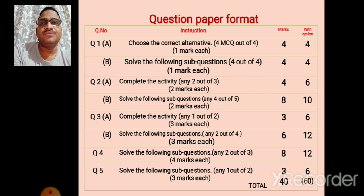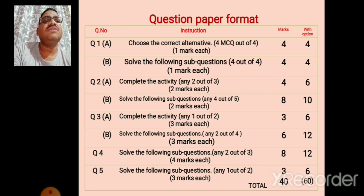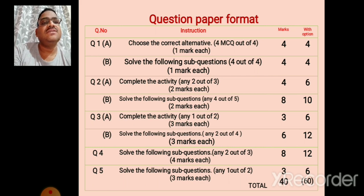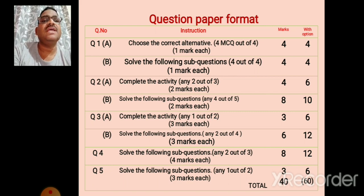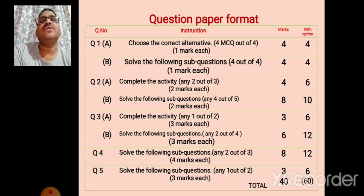Question number 2 again has two parts, A and B. In part A, complete the activity: three activities are given and you have to solve any two, two marks for each. Then question number 2B, solve the following sub-questions: five sub-questions are given and you have to solve any four, two marks for each. Question number 2B is of eight marks and total question number 2 is four plus eight, that is twelve marks.